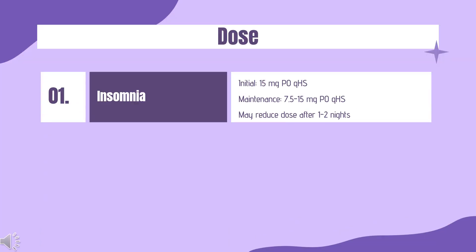Dose. For insomnia: initial dose is 15 mg orally at bedtime (POQHS). Maintenance dose is 7.5–15 mg orally at bedtime. The dose may be reduced after 1–2 nights.